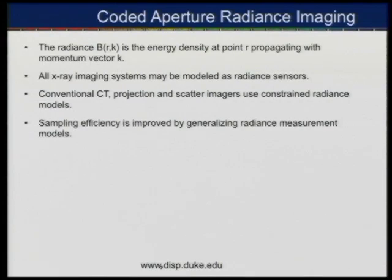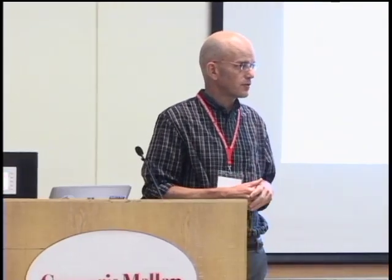What we've been focused on in the last couple of years is applying this to radiance imaging, which is x-rays. These are all models of measuring the same electromagnetic field, but based on frequency and resolution, you choose a different model. With x-rays, we work in terms of the radiance — the intensity of the field at a point in space and the momentum of the field propagating in space. On a surface, the radiance is a four-dimensional function. Most reasonable CT systems are essentially radiance sensors. The general design problem is that you don't have radiance cameras — you can only measure intensity at a point, not the direction of propagation of x-rays.